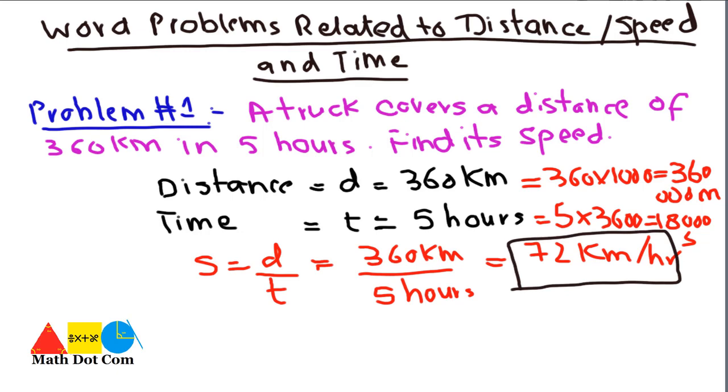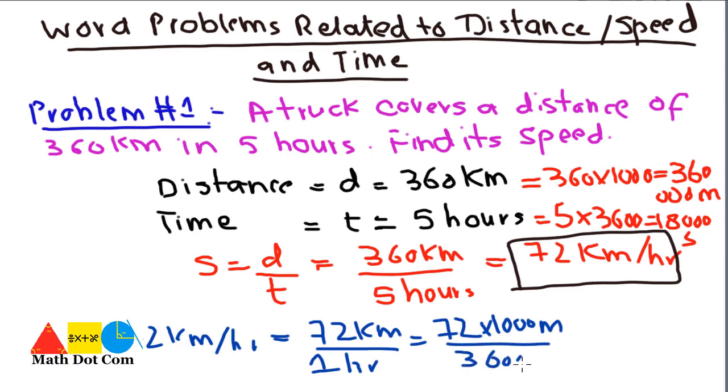The speed we get is 72 kilometers per hour, which means 72 km over 1 hour. We replace 72 km by 72,000 meters. This is easier than converting before the solution: 72,000 meters over 3600 seconds equals 20 meters per second. This is how you can calculate speed if you are given distance and time.